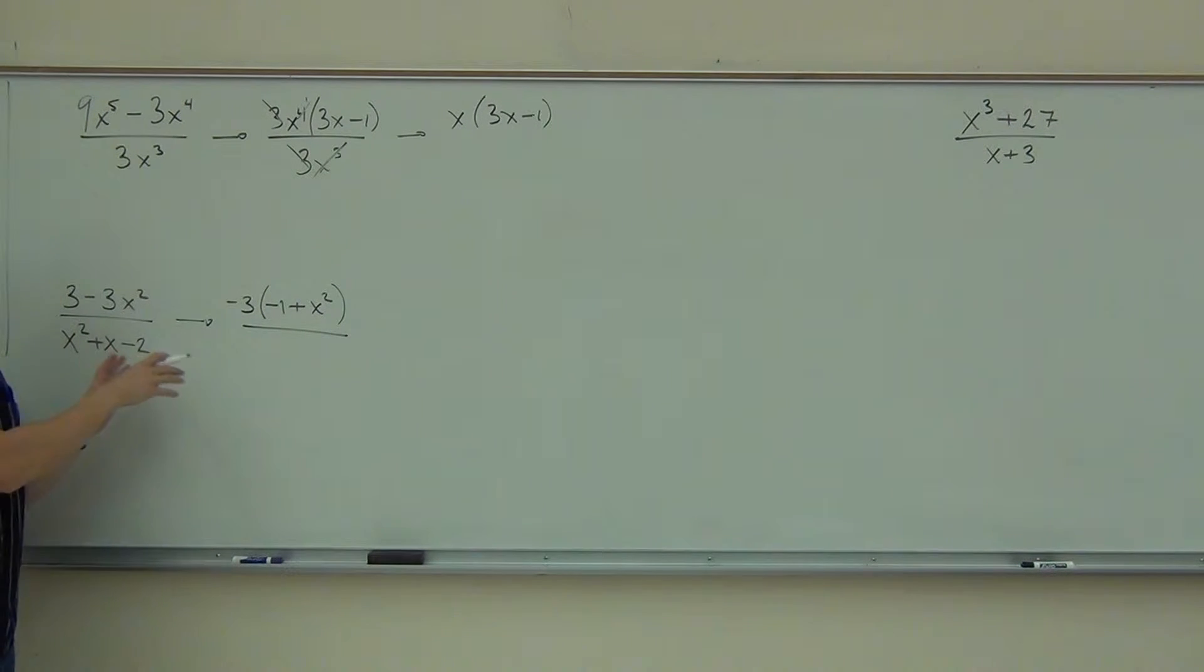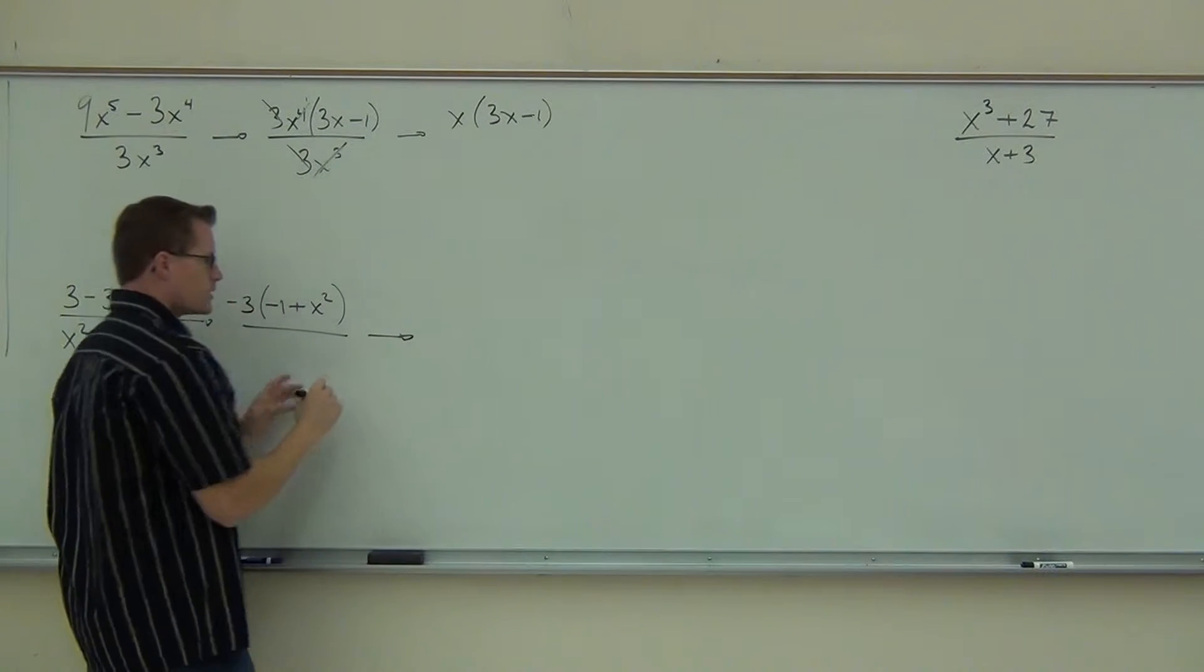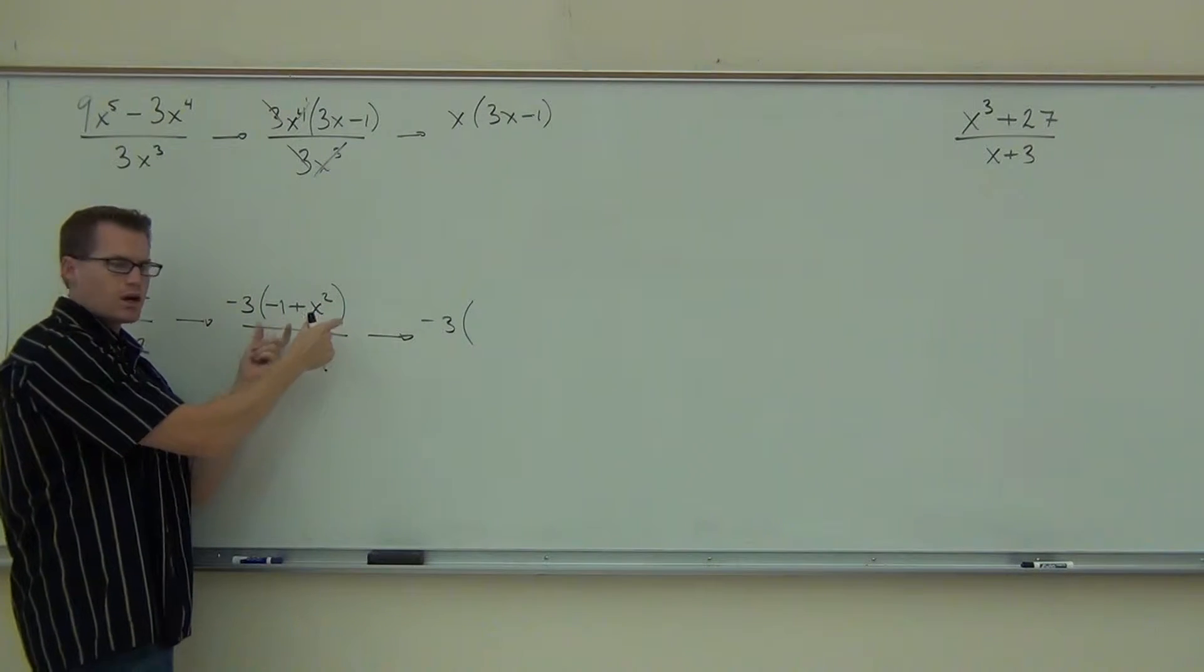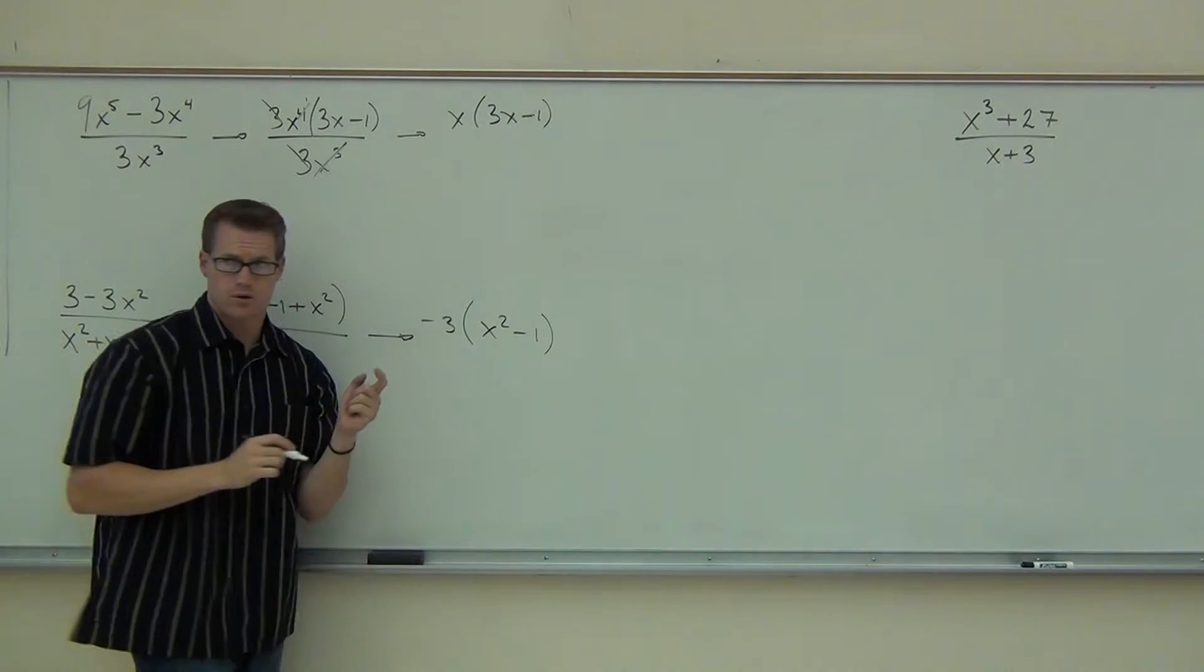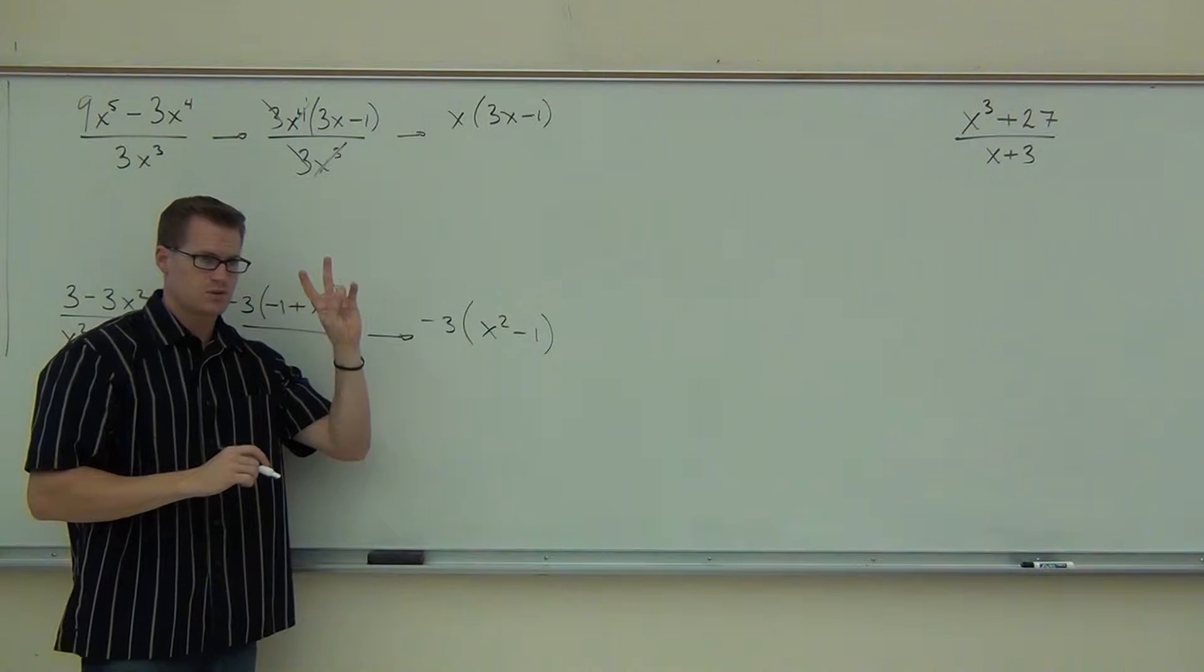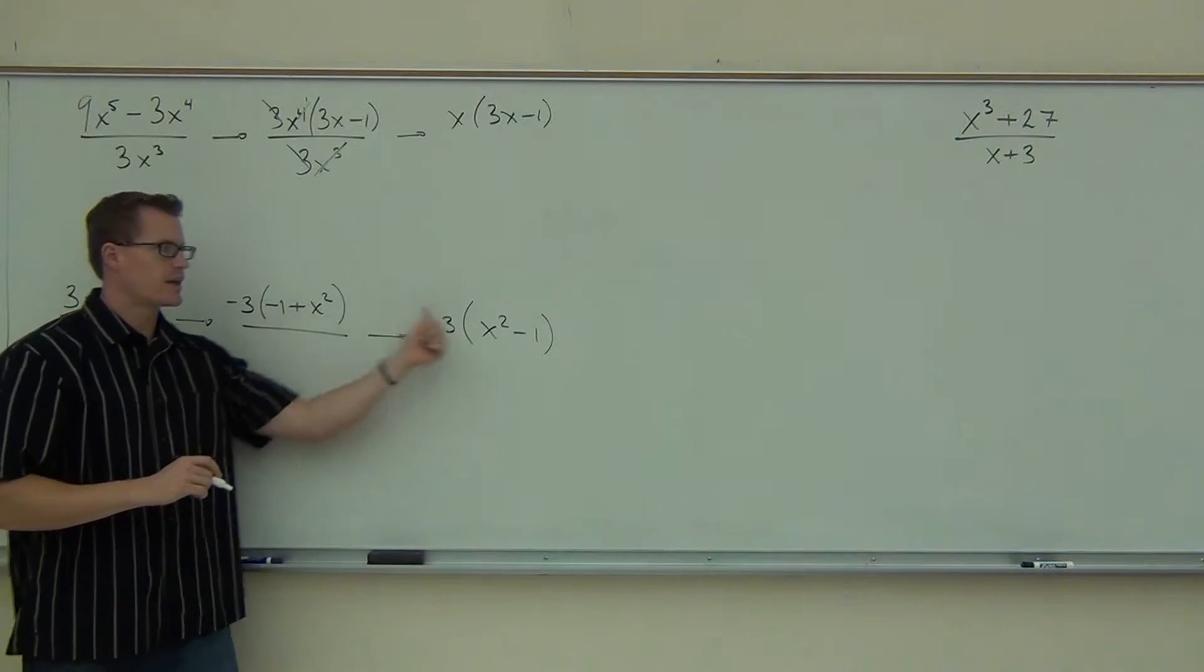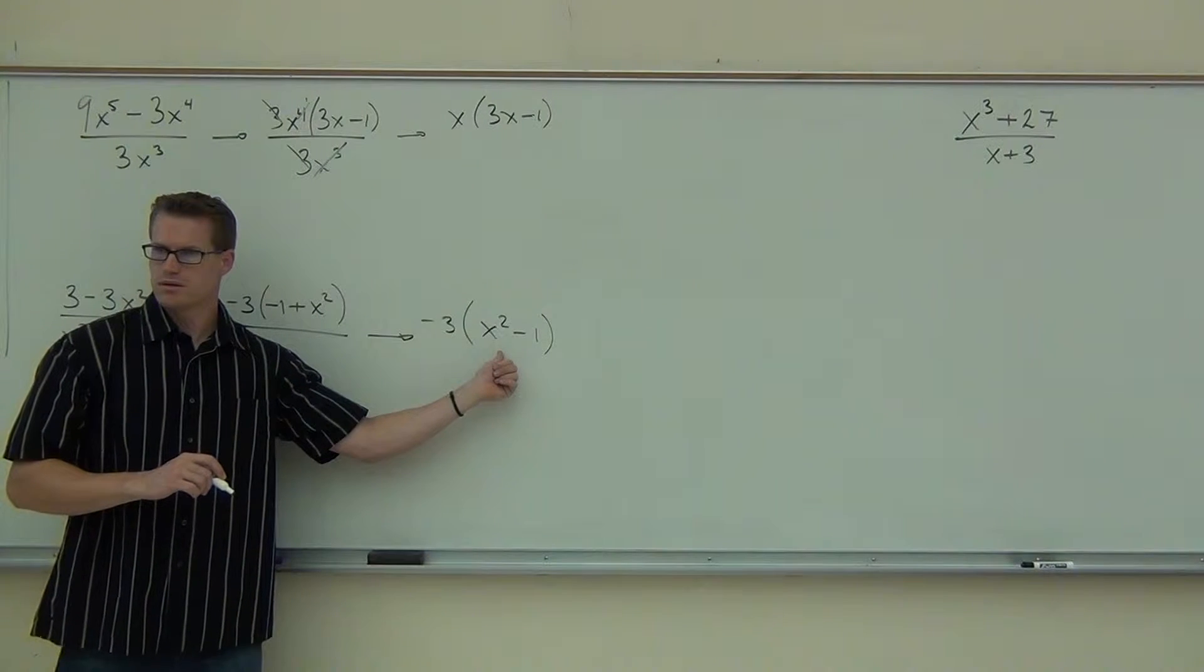Let's leave the denominator alone for a second. Let's work just on the numerator for now. I want to make sure we get this all the way down. So the negative 3 is going to stay there, but I am going to switch these things around. Instead of negative 1 plus x squared, I can write this as x squared minus 1. Are you okay with that?